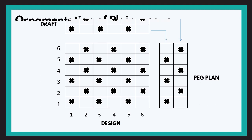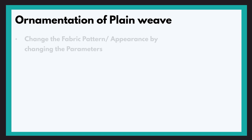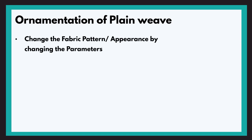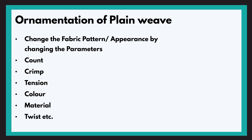Now let us study the ornamentation of plain weave. Ornamentation means decoration — we change the appearance or pattern by changing the parameters while the weave structure remains the same. Parameters we can change include: yarn with different counts such as coarser or finer counts; variation in crimp percentage; yarn with different tensions; warp or weft of different colors; stripes or checks patterns with different colors; different material for warp and weft; and variations in twist levels for warp threads to produce a crepe effect. These are some ways ornamentation of plain weave is done.